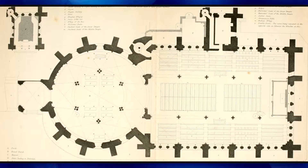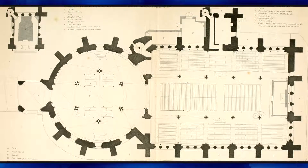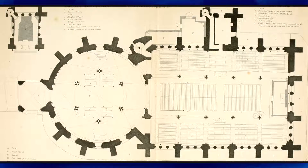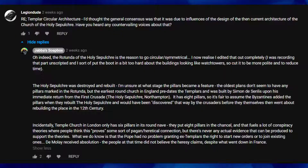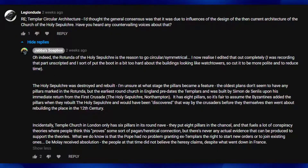Temple Church in London only has six pillars in its round nave. They put eight pillars in the chancel. And that fuels a lot of conspiracy theories where people think this proves some sort of pagan or heretical connection.